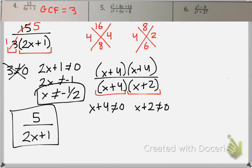Both factors we say cannot equal 0. So x cannot equal negative 4 or negative 2. Those are my restrictions.